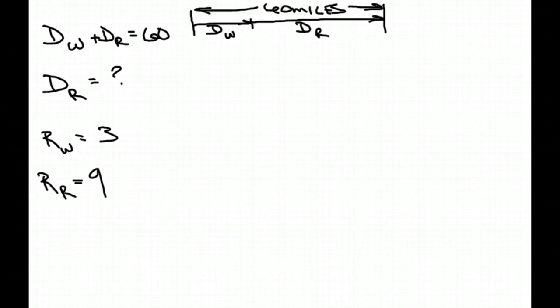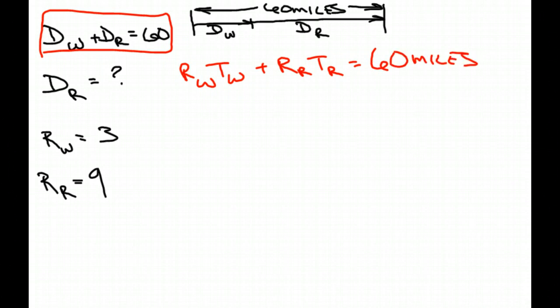We do know, since this is true, we know that the rate walking times the time of walking plus the rate riding times the time riding equals our distance of 60 miles. How many variables do I have up there? Four. How many equations do I have to have in order to have four variables? Four. I have to have the same number of equations as I do variables in order to solve this.